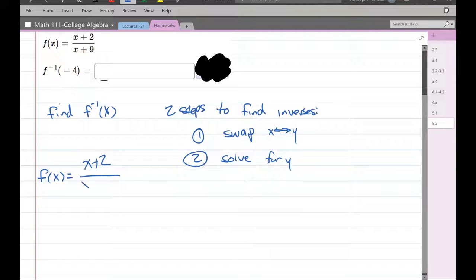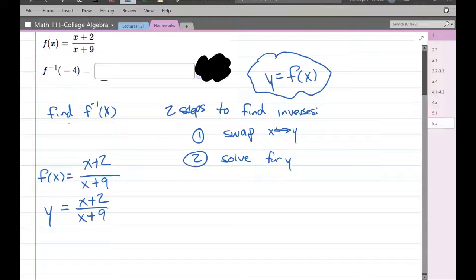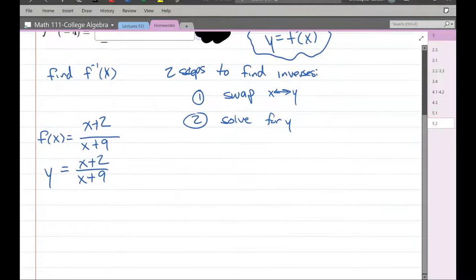I'm copying right at the top of the screen there. Now, first of all, you should be saying, well, there's no y here. So how am I going to swap x and y? Well, we always know that y equals f of x. So the f of x is always the y value. So I'm going to swap out the f of x for y. Now I can swap x and y.